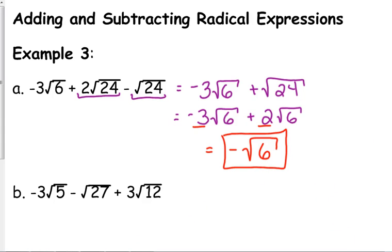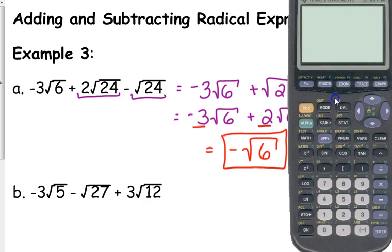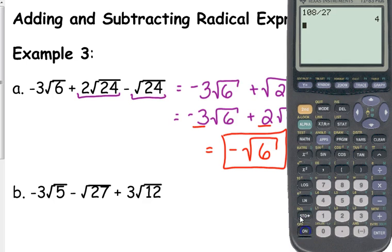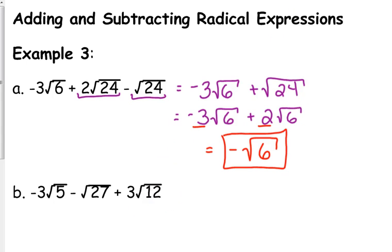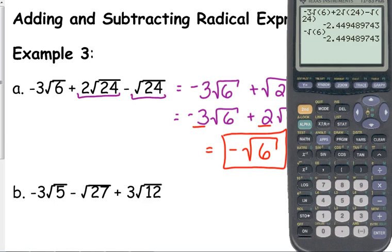Similarly, to how we checked the problems a second ago, you can check these. Again, it won't tell you if you simplified it fully, but it will tell you if you made a mistake or not. Just make sure that you close your parentheses after every square root. And you can type in the original expression, get its decimal value, type in what you say the simplified answer is, and those decimal values should match.